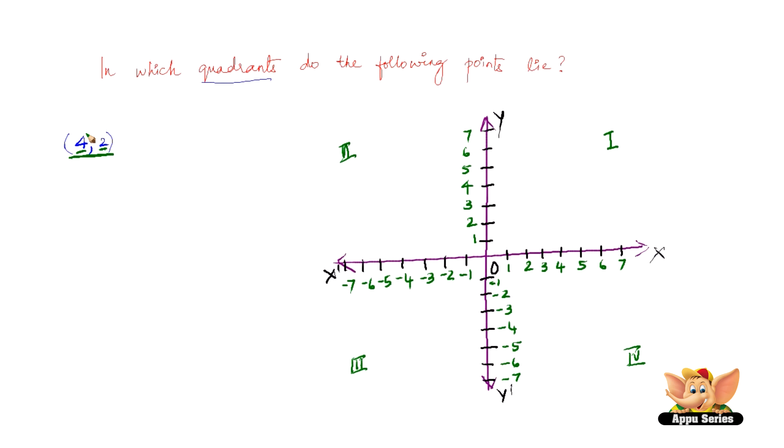As we can see, positive 4 on the x-axis is here and positive 2 on the y-axis is here. So if we plot these points, the point lies here. So the first point lies in the first quadrant.